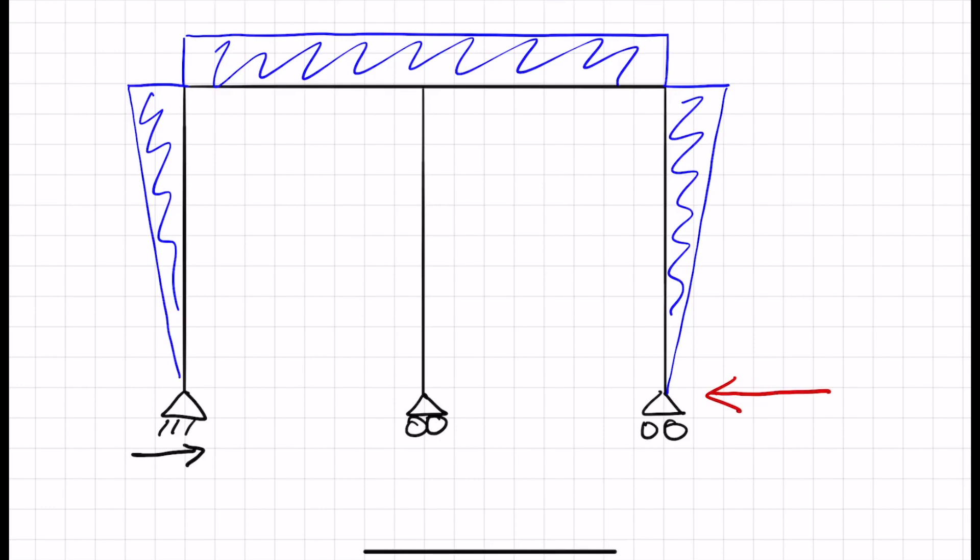Well, the issue is, if you draw the deflected shape of this frame to get any bending moment on the outside, that would need to curve upwards there. But this bending moment assumed, because we have a constant bending moment there, that means we have a constant curvature all the way across the top.